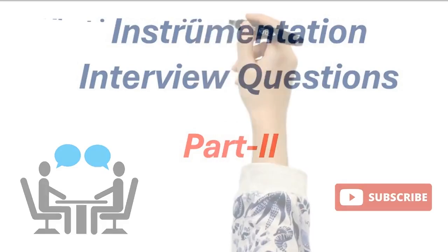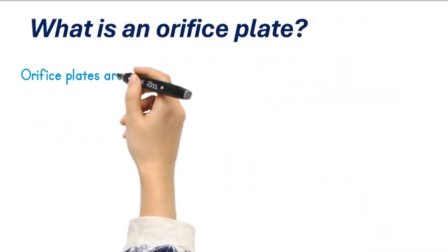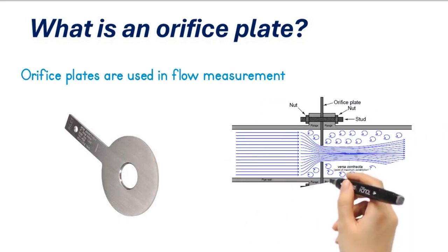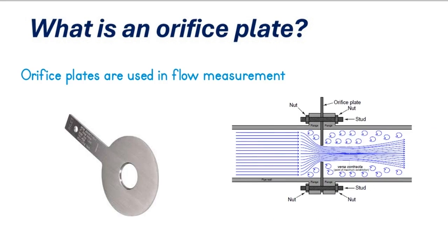What is an orifice plate? Orifice plates are used in flow measurement. It is a thin plate consisting of a hole in the center. The orifice plate is installed in the pipe carrying fluid. The orifice plate creates a pressure drop across it. The flow rate of the fluid flowing in the pipe can be calculated using this pressure drop.